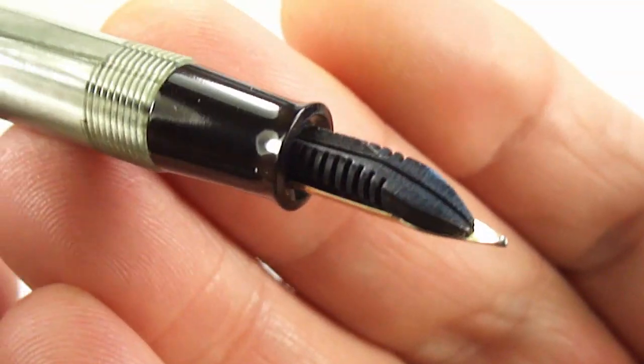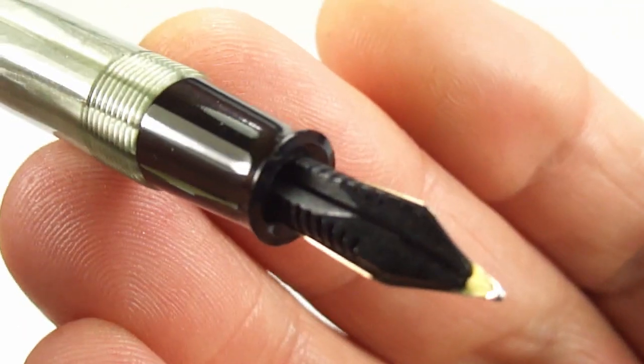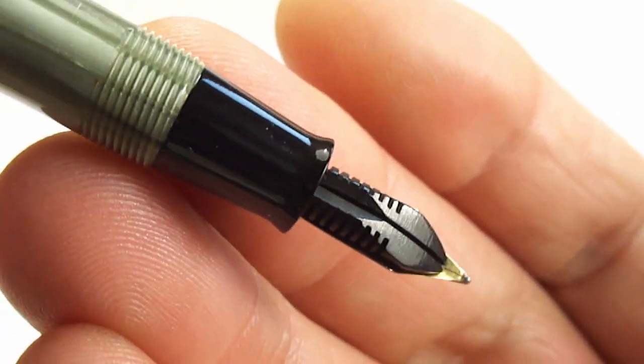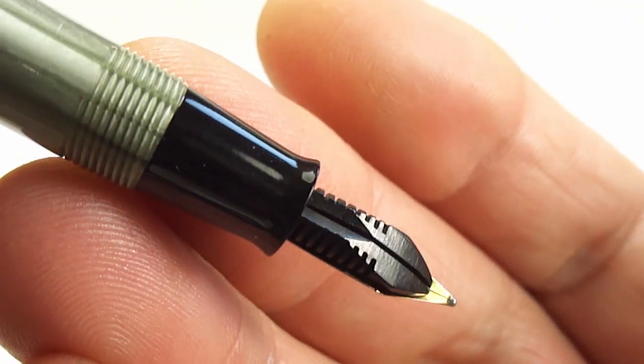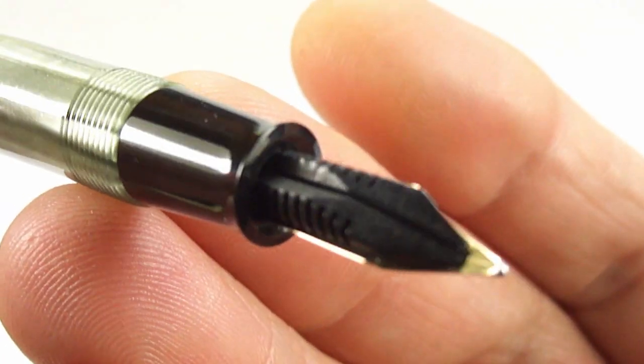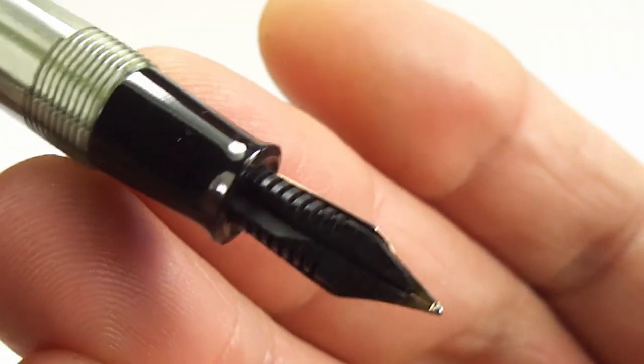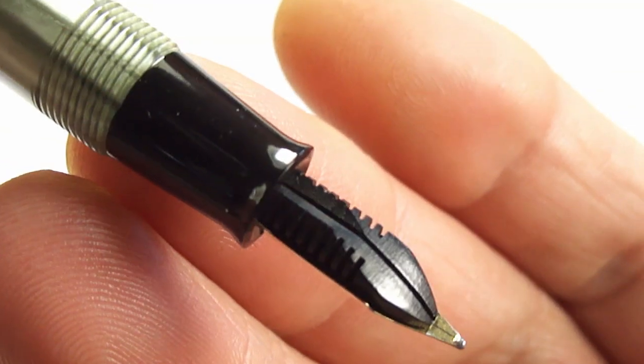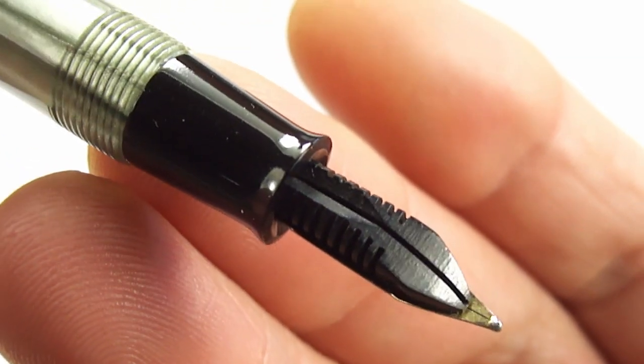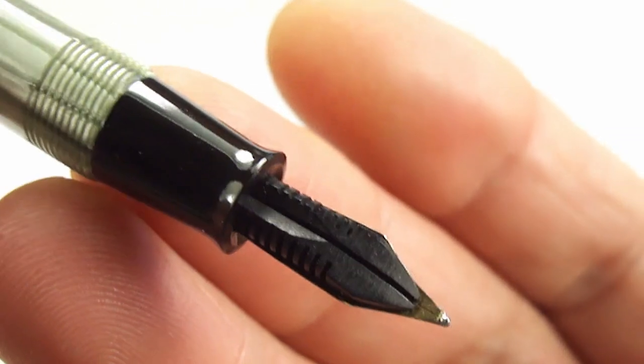Let's turn it round and show you the feed there. You can see it's got this sort of quite unusual but a Waterman feed with this sort of channel to the middle there. This pen I've actually seen with just a normal standard plain feed, so even the feeds on the pens in some cases were a little different.